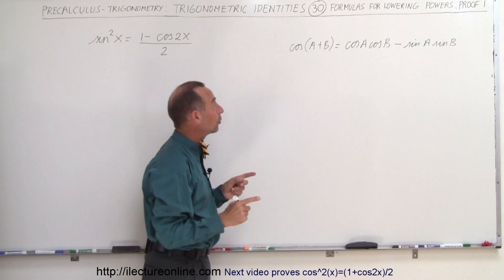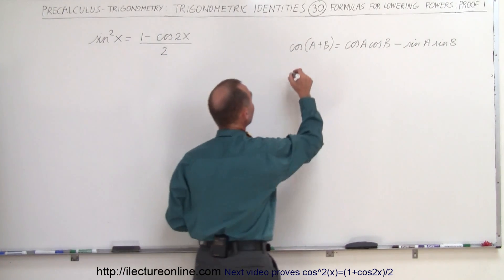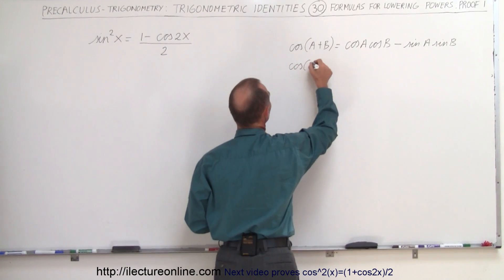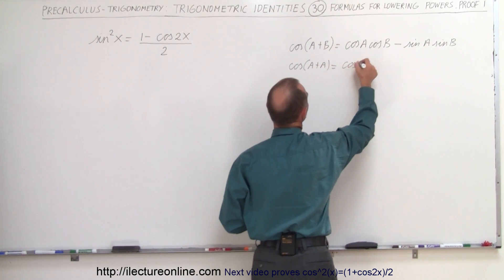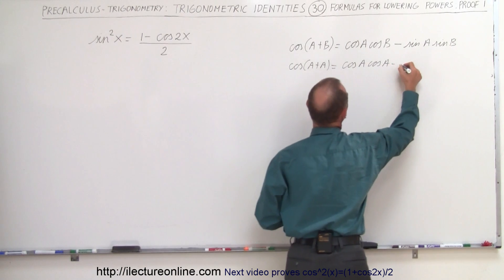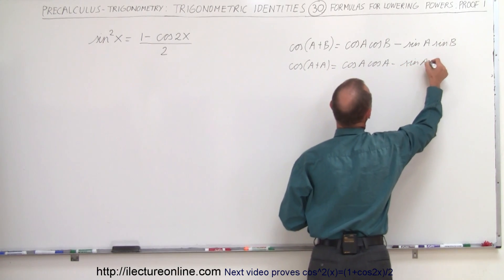Okay, what we're going to do now is we're going to call that A plus A and see how that changes. So when we call this cosine of A plus A, that is equal to the cosine of A, cosine of A, minus sine of A, sine of A.